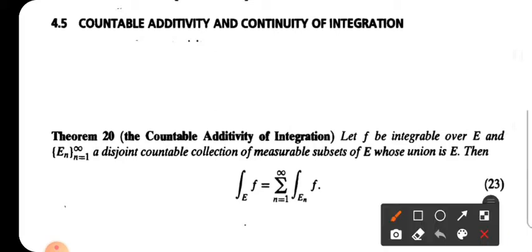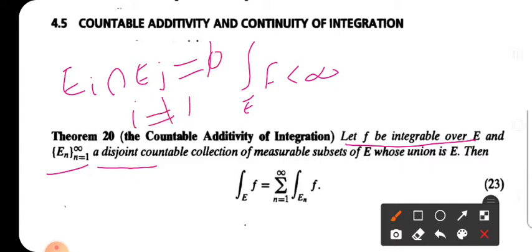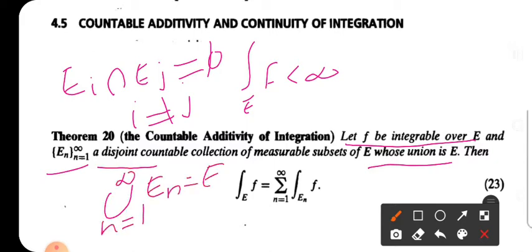Then the integral of F over E is finite, meaning F is integrable over E. Each E_i and E_j are disjoint — that is, E_i intersection E_j is empty for every i not equal to j. The union from n equals 1 to infinity of E_n equals E. Under these conditions, we have to show that the integral of F over E equals sigma from n equal to 1 to infinity of the integral of F over E_n.